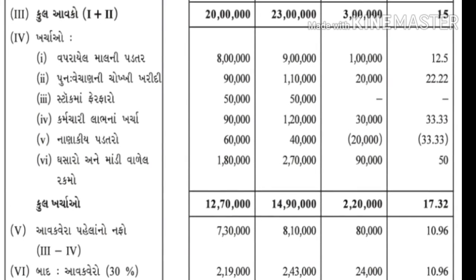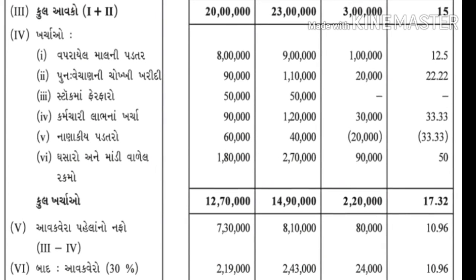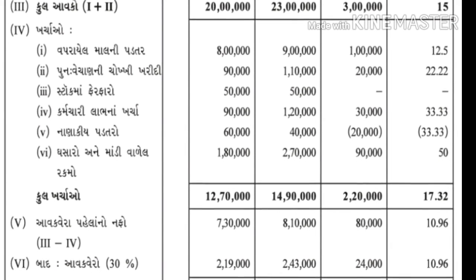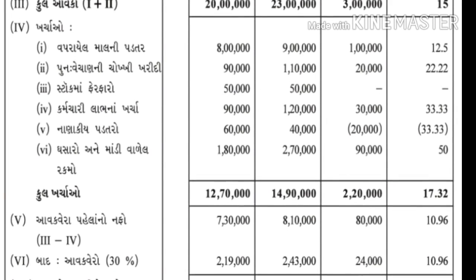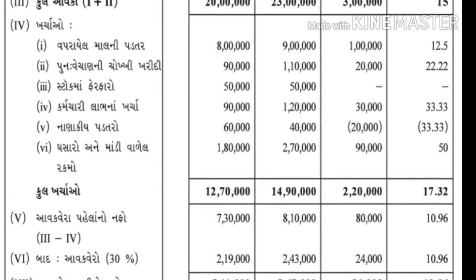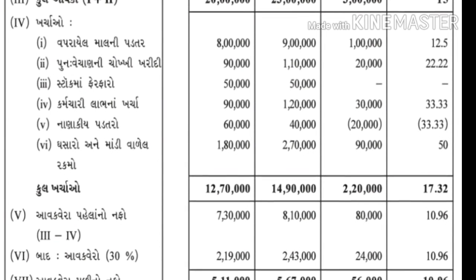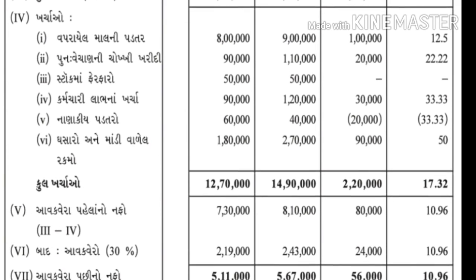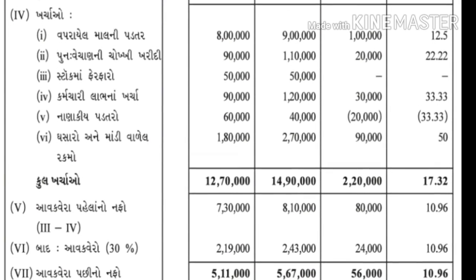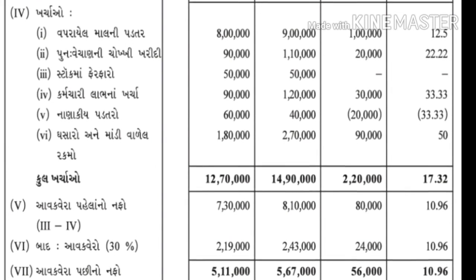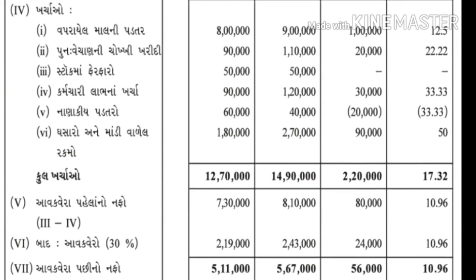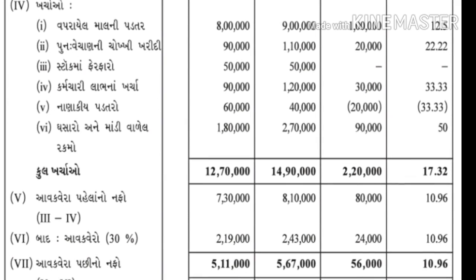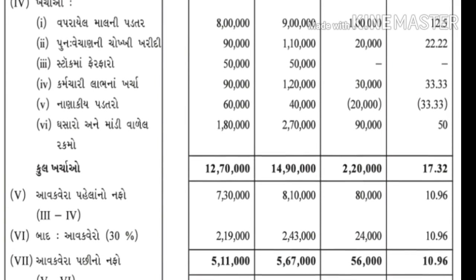12 લાખ 70 હજાર - ઘટ - 2 લાખ 20 હજાર - ખર્ચ - વધારો. ત્યારબાદ - 2017ની આવકવેરા પહેલા - 8 લાખ 10 હજાર, 2016ની - 2 લાખ 43 હજાર - 2017 - 2016ની - 2 લાખ 49 હજાર - 2 લાખ 43 હજાર ÷ 2 લાખ 49 હજાર - આવકવેરો - 2016.